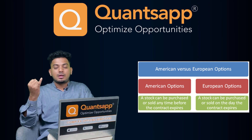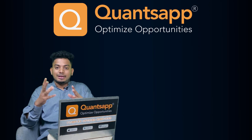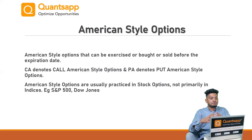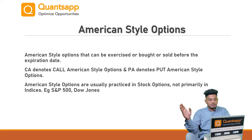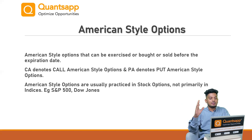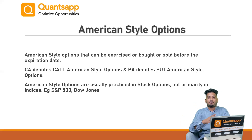There are two styles of options. The first one is the American style option and the other one is the European style option. American style options are options that can be exercised — bought or sold — before the expiration date. As we studied in the options video, there is an expiry date, and American style options can be exercised even before that expiration date.